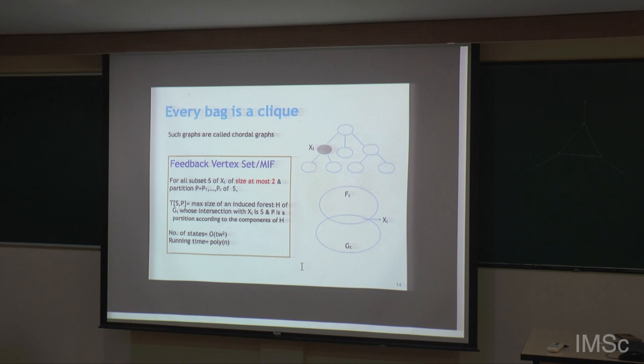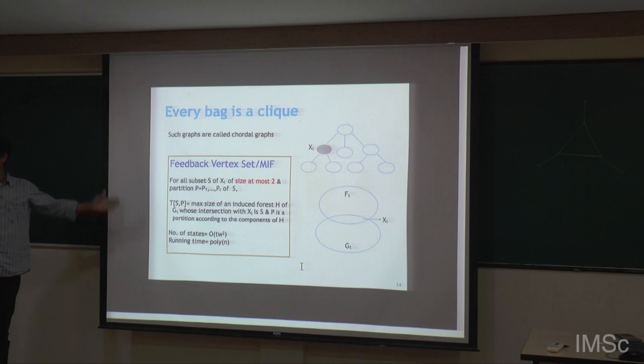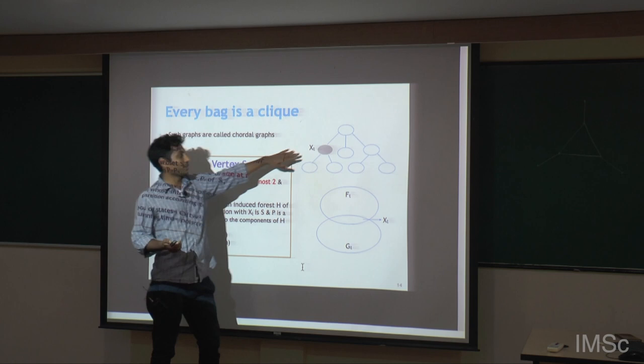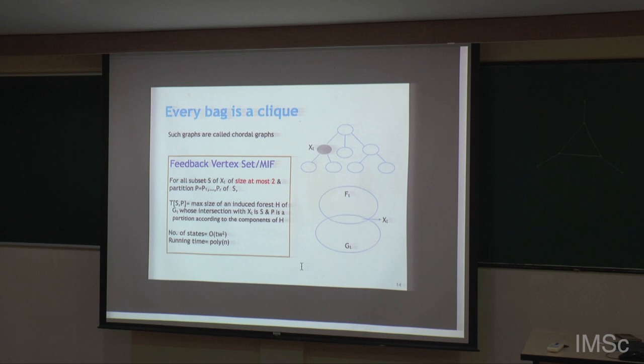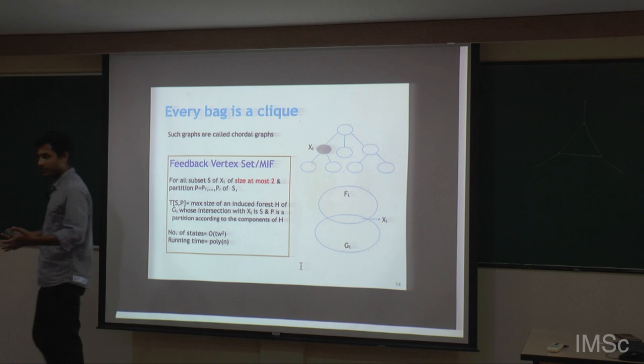You can think about dominating set — it will not work here; it is NP-complete. But for these two problems, yes. So this is an example of a structured tree decomposition where every bag has some structure — specifically, the graph induced on every bag is a complete graph.